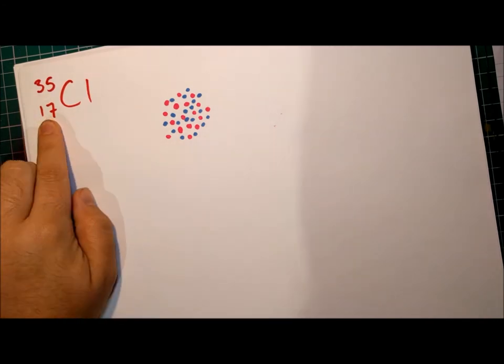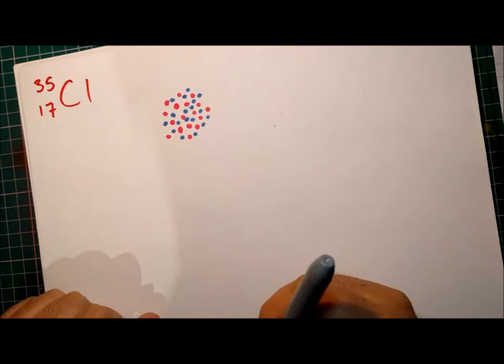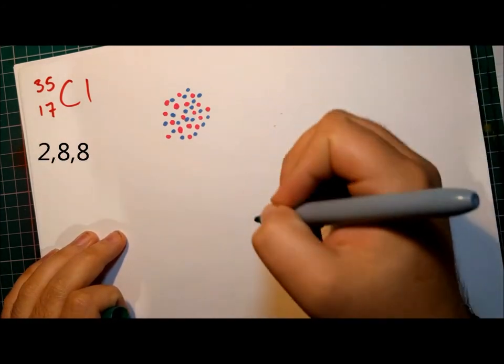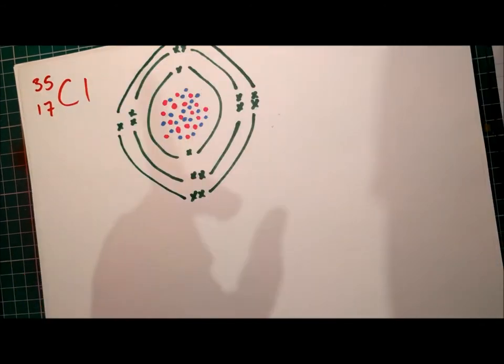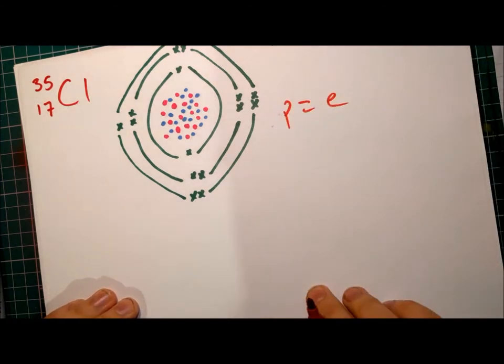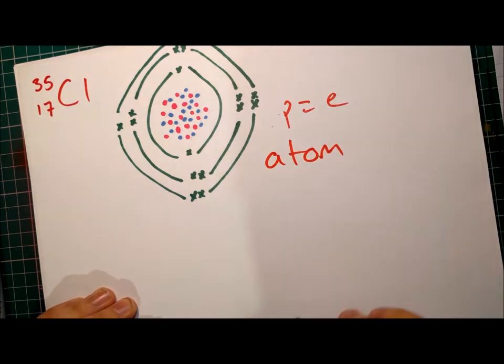Much larger nucleus this time. So if there are 17 protons, then there will be 17 electrons. We're still going to follow the 2, 8, 8 rule. Let's see how far we get. So we now have equal numbers of protons and electrons, so this is still an atom. This is a chlorine atom.